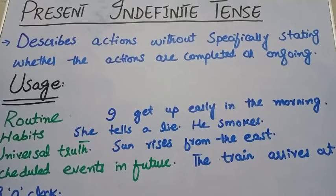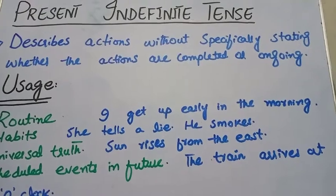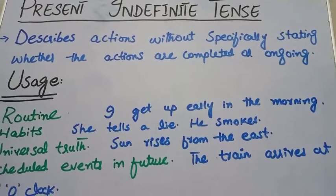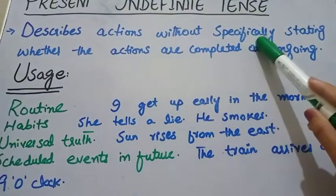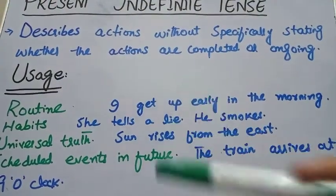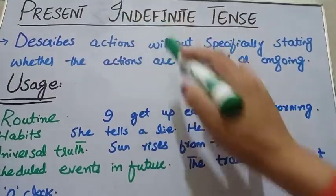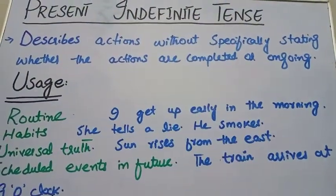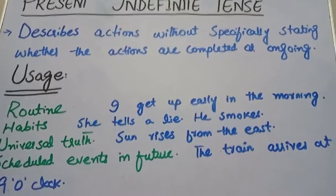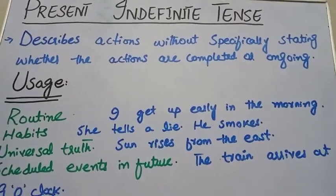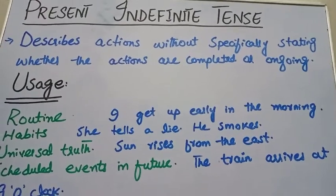Assalamu Alaikum everyone, welcome to my channel. Finally, we are going to present indefinite tenses. Indefinite tenses are the type of tenses which describe actions without specifically stating whether the actions are completed or ongoing. As the name shows, there is no definite time in these actions — no clear indication of when the action is completed or whether it is ongoing.